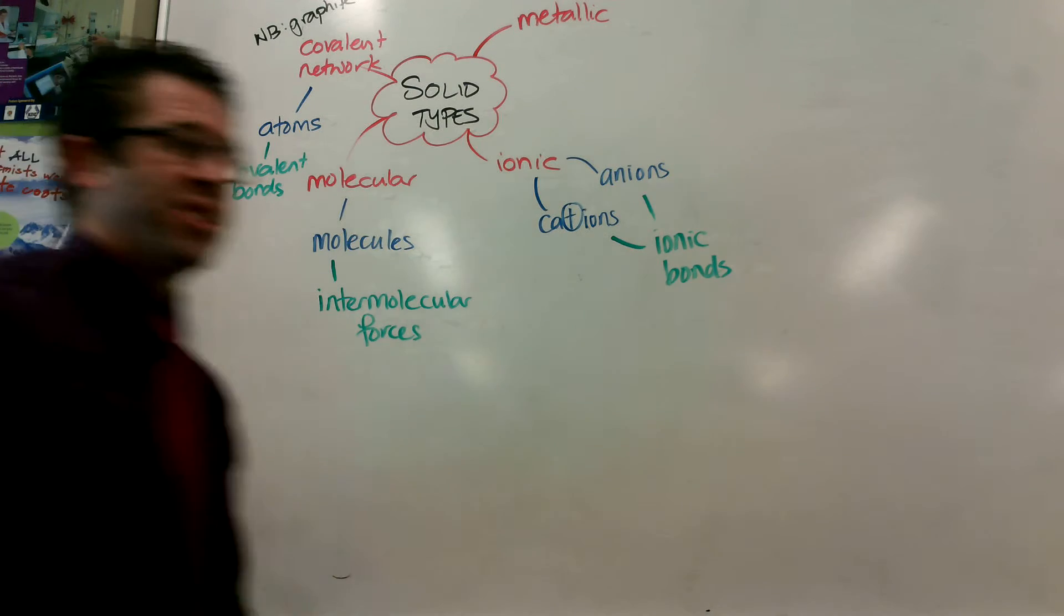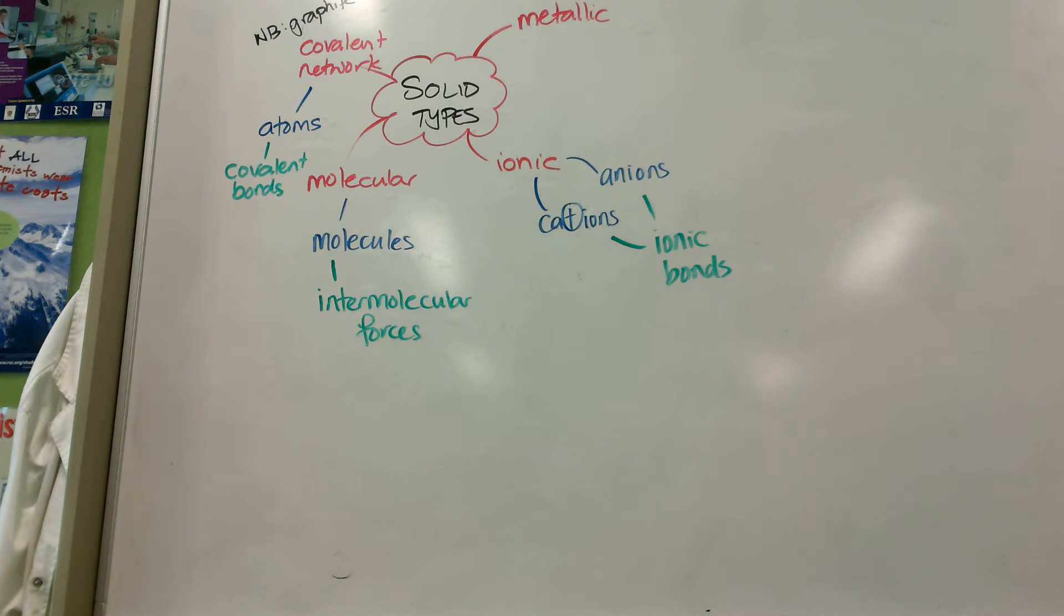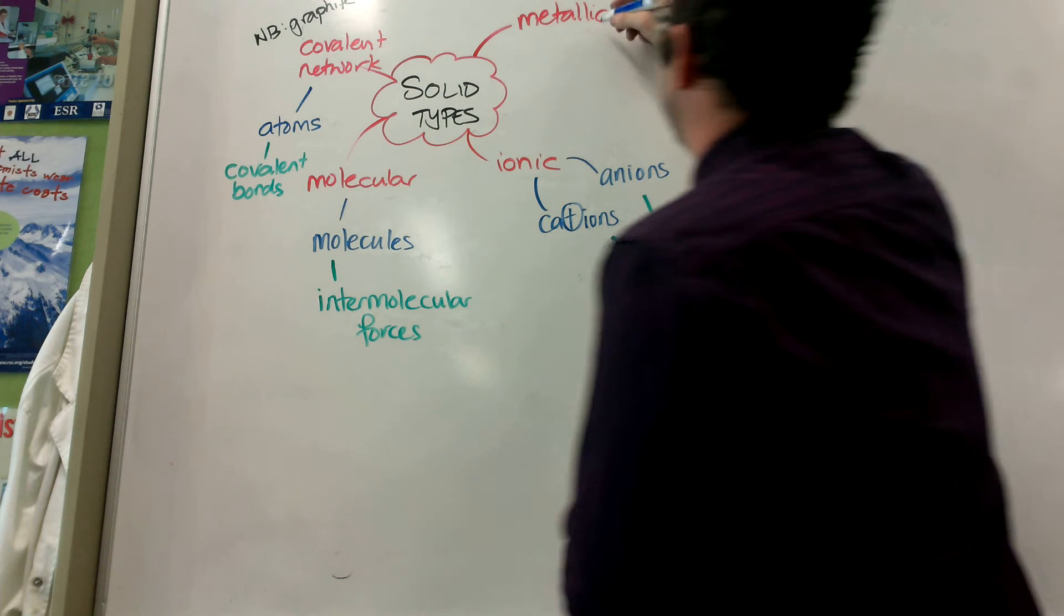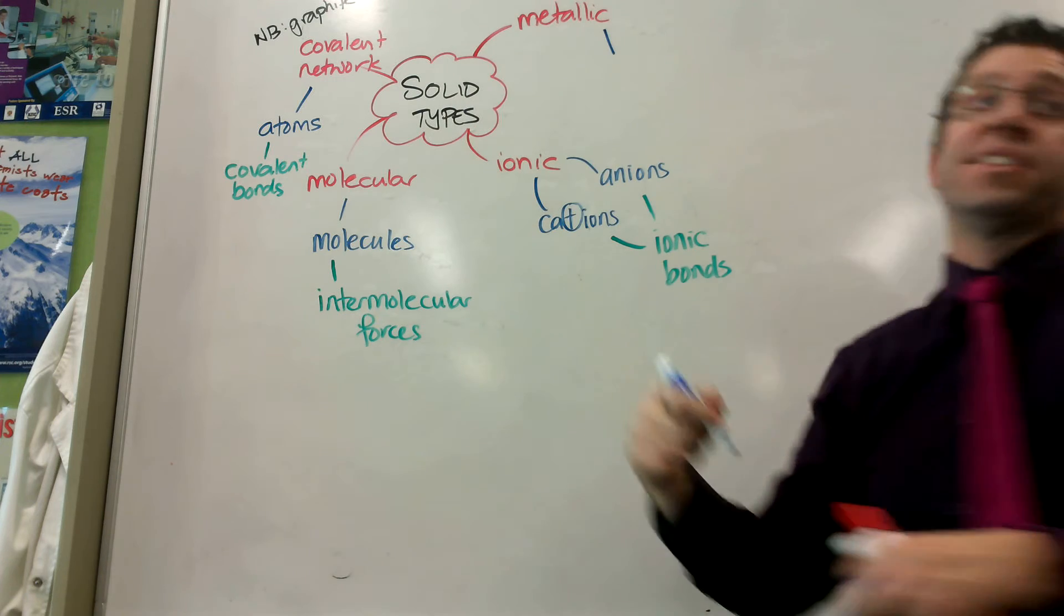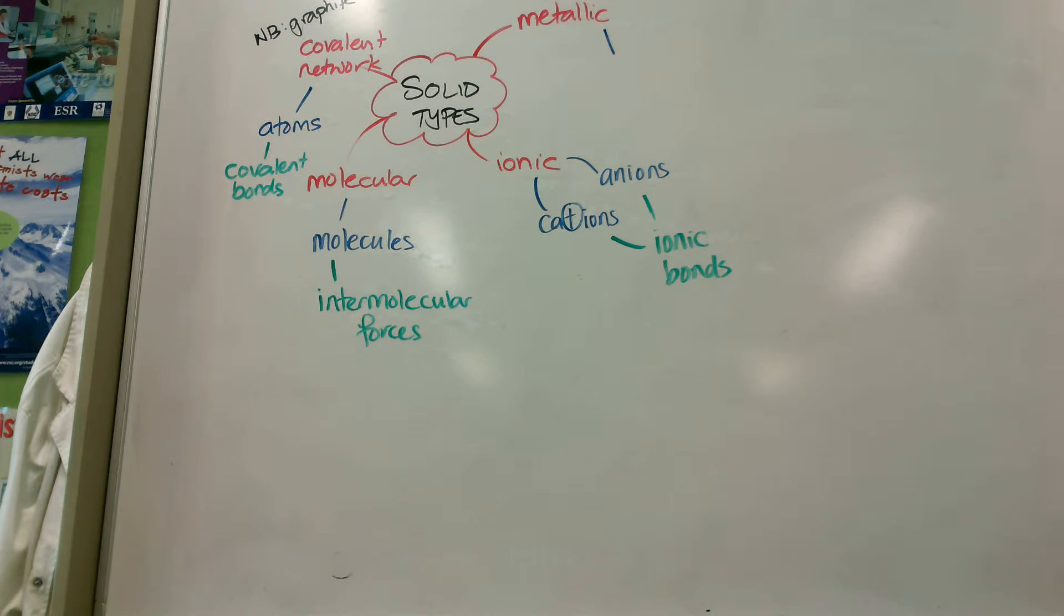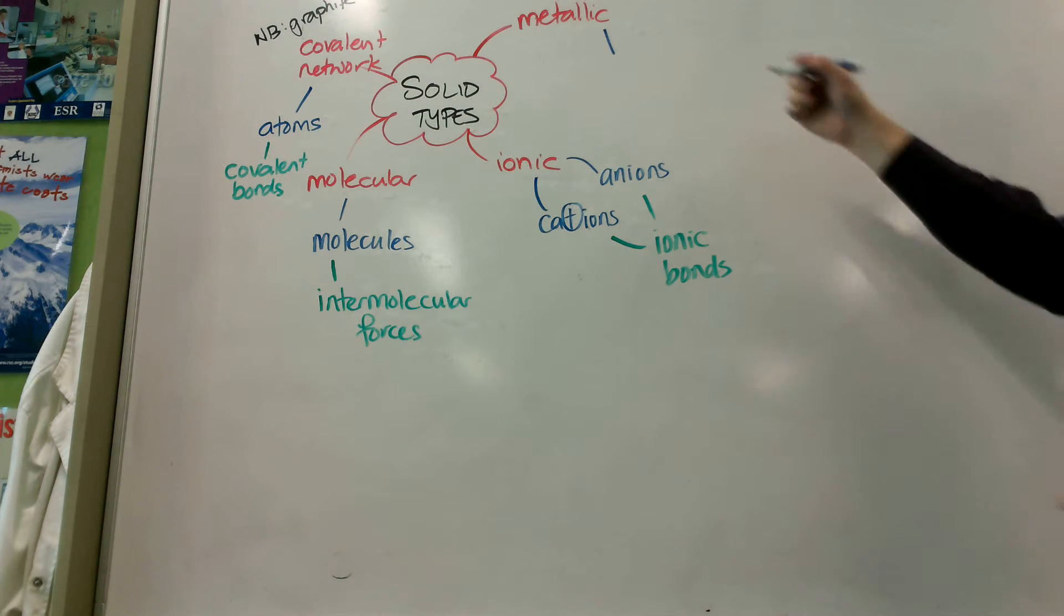Probably the hardest one to actually explain a lot of the properties, but the one you know the most about, because you've known what a metal is since you were little. What are the particles? Be specific. Cations and valence electrons. Cool.